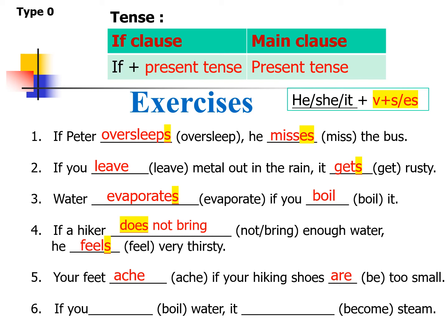Last one, number six: 'If you boil water, it becomes steam.' Steam means hot gas. 'You boil' — no s, because it's not he, she, it. But 'it becomes' — 'it' is he, she, it, so we add s to 'become.' So: if you boil water, it becomes steam. Well done!